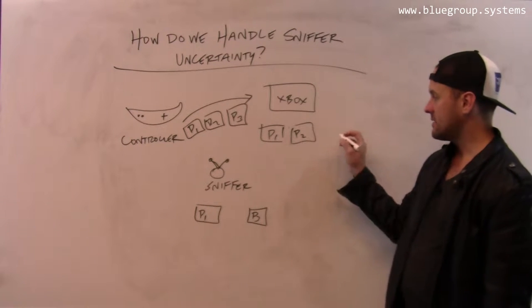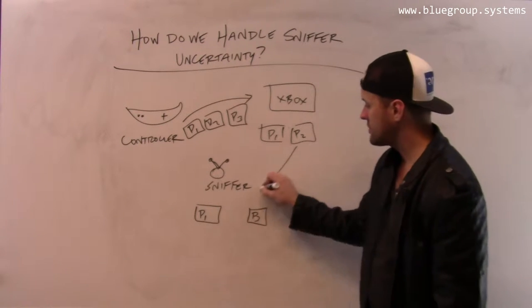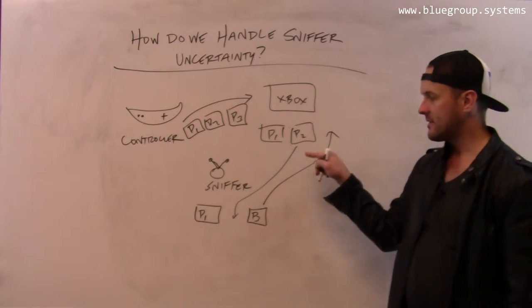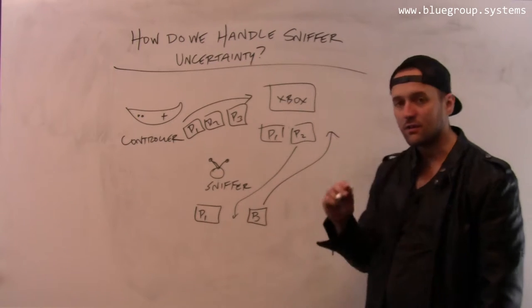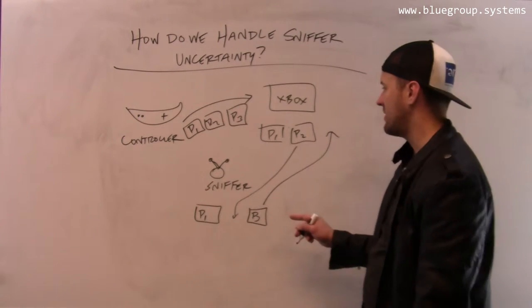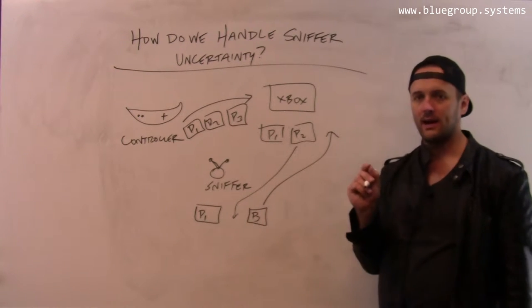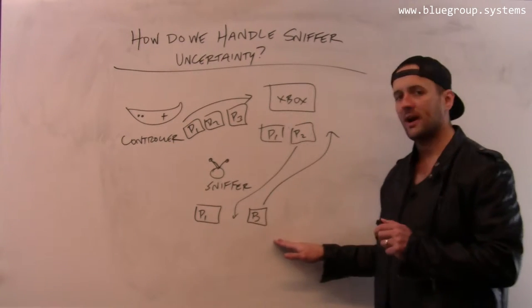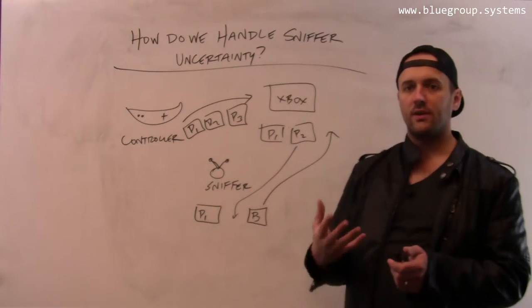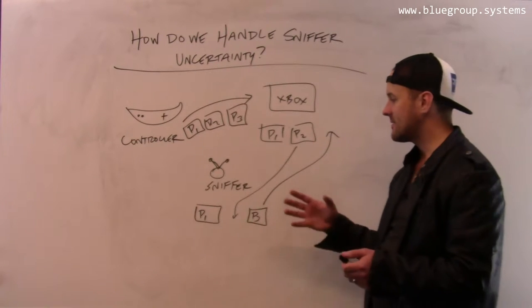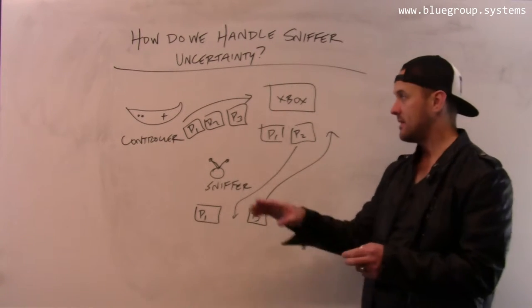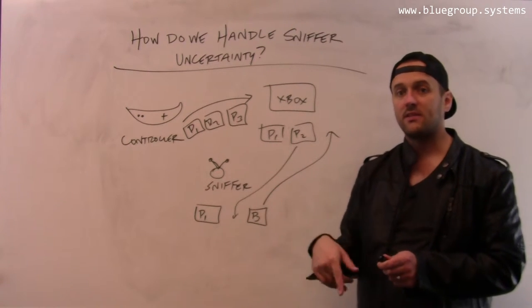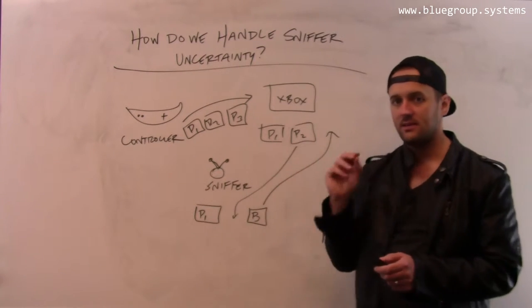So in this case, I can observe two types of uncertainty. There is a packet that the controller received that the sniffer did not, P2. There's also a packet that the sniffer received that the controller did not, P3. And so the trace provided by the sniffer for verification has these problems. It contains packets that the devices under test never received, and it also misses packets that the devices under test did receive.